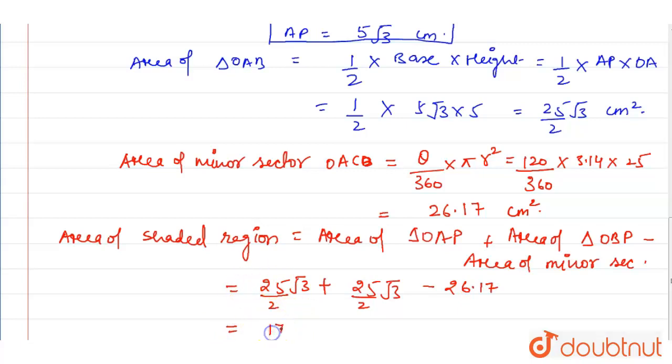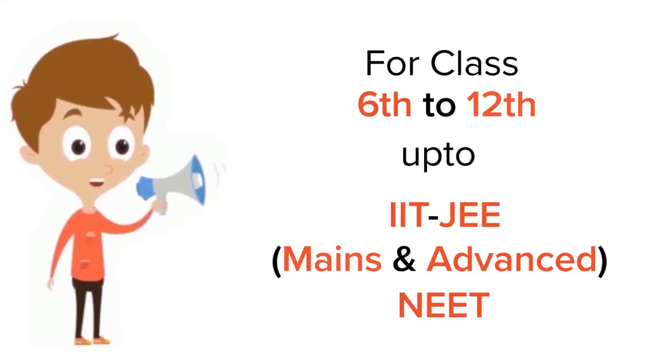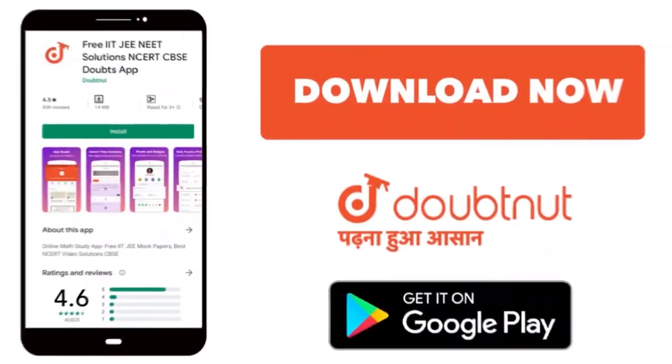So the final area of shaded region is 17.08 centimeter square. For class 6 to 12, IIT, JEE and NEET level, trusted by more than 5 crore students, download Doubtnet app today.